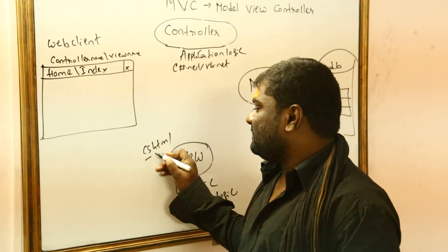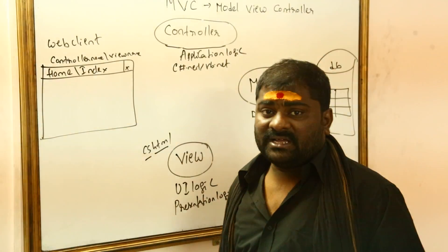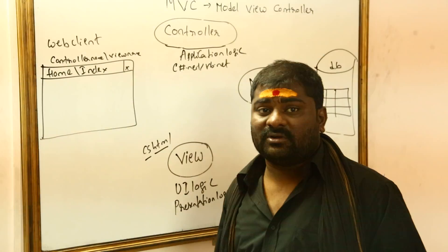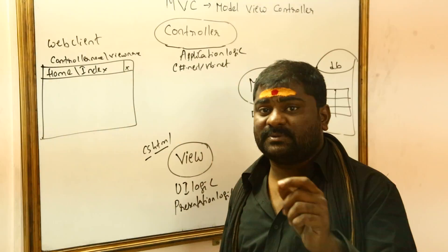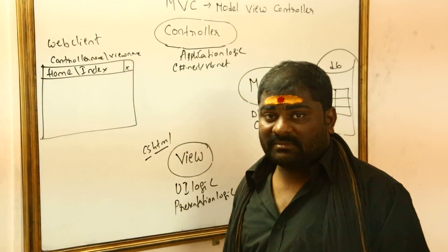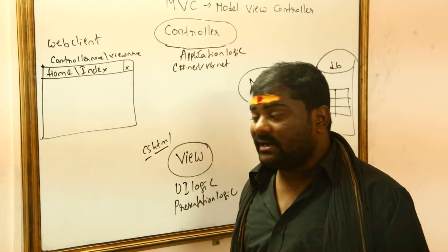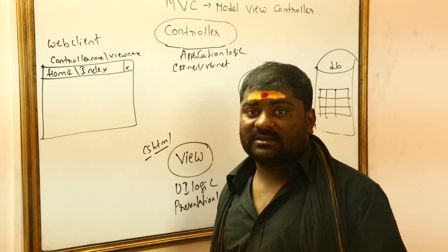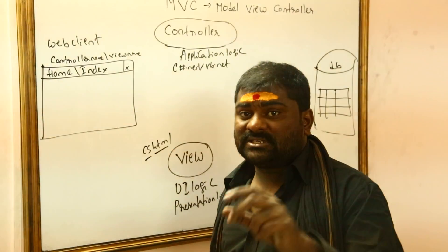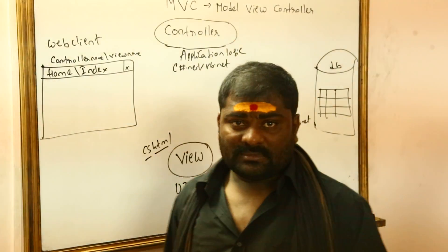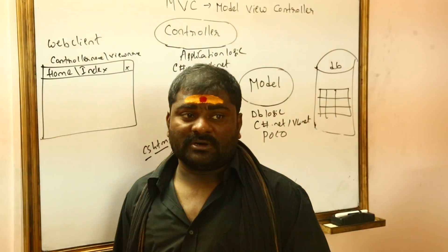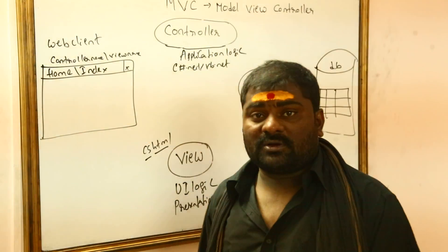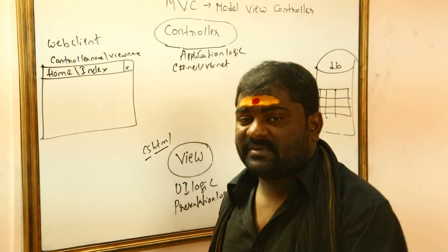CSHTML is C-sharp combined with HTML. In ASP.NET we declare only .ASPX files, but in MVC we declare CSHTML — C-sharp code is integrated with HTML code in MVC.